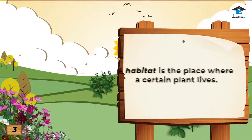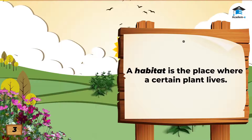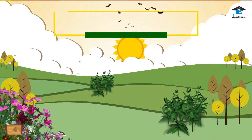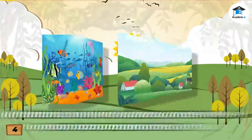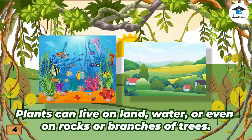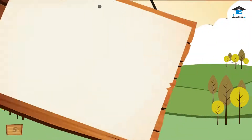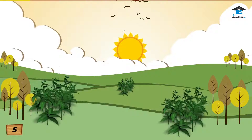The place where a plant lives is called a habitat. Where do plants grow? Plants can live on land, water, or even on rocks or branches of trees. Terrestrial, or land plants, are plants that grow on land.